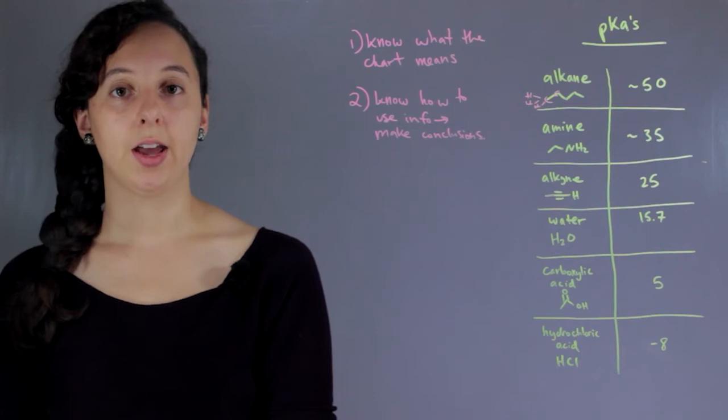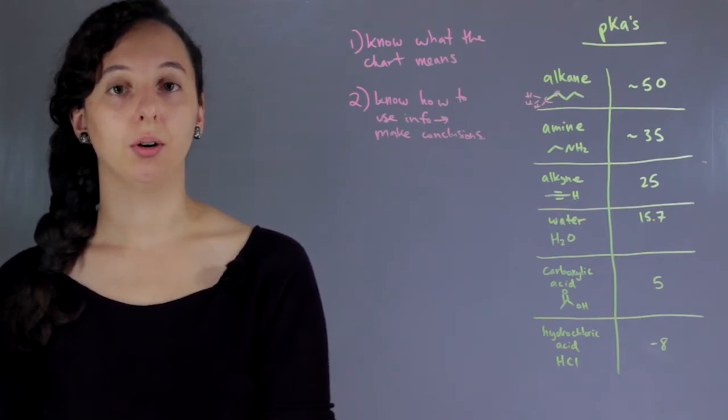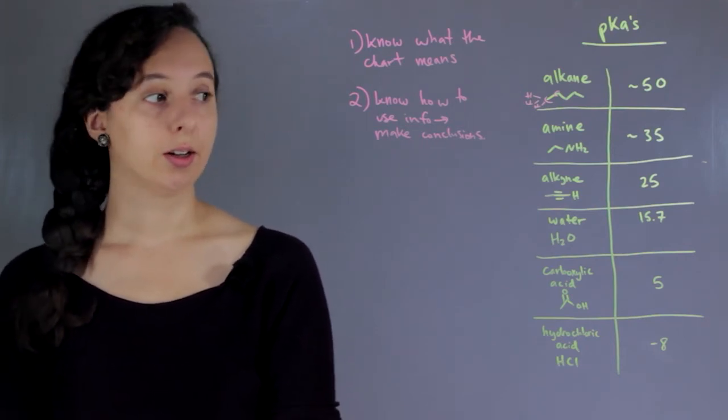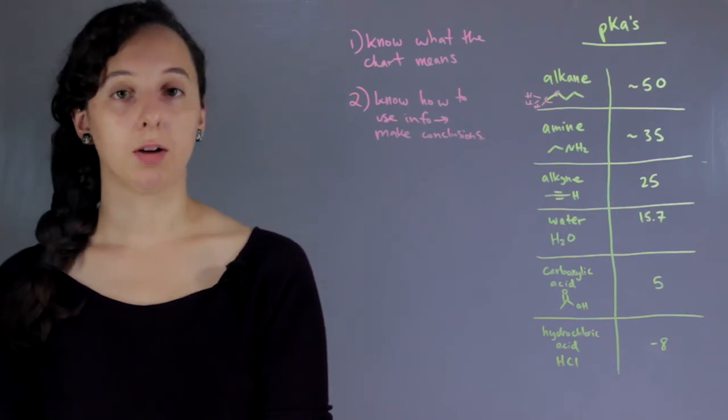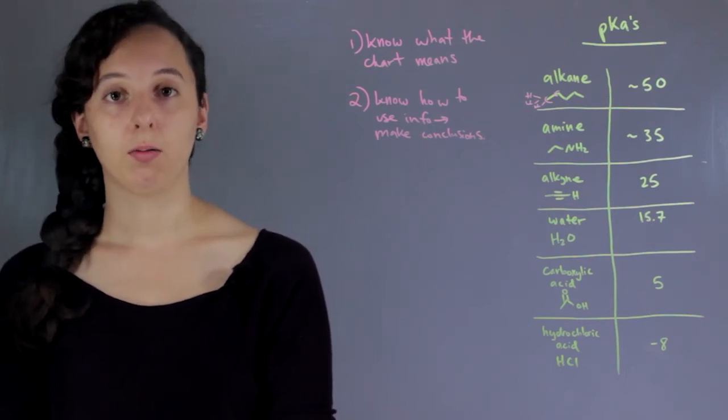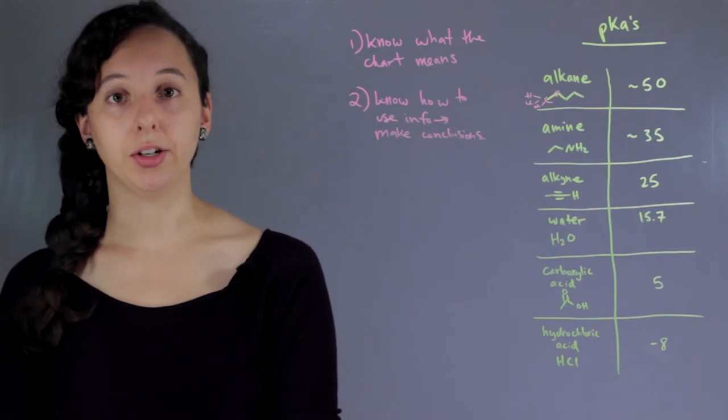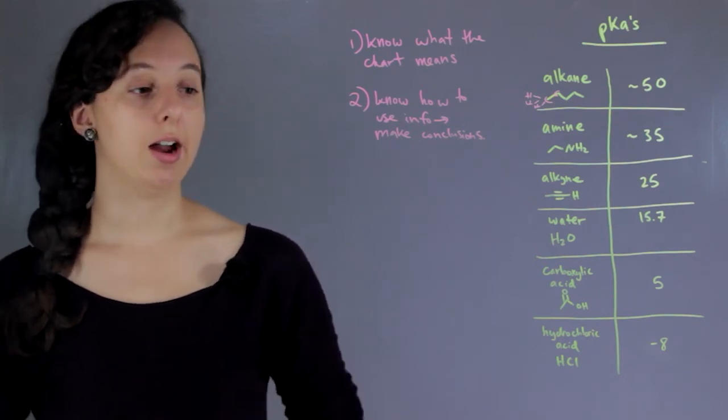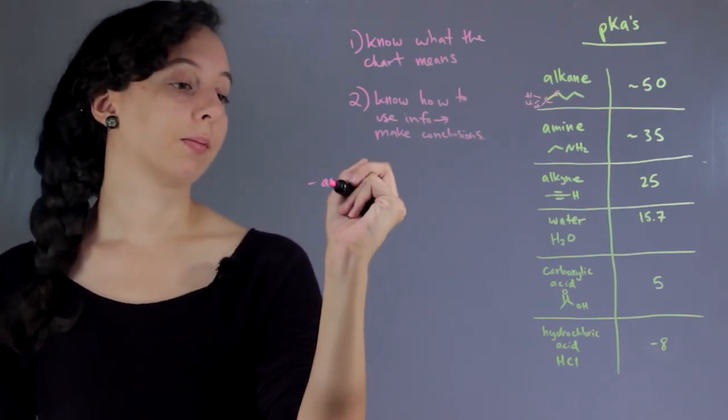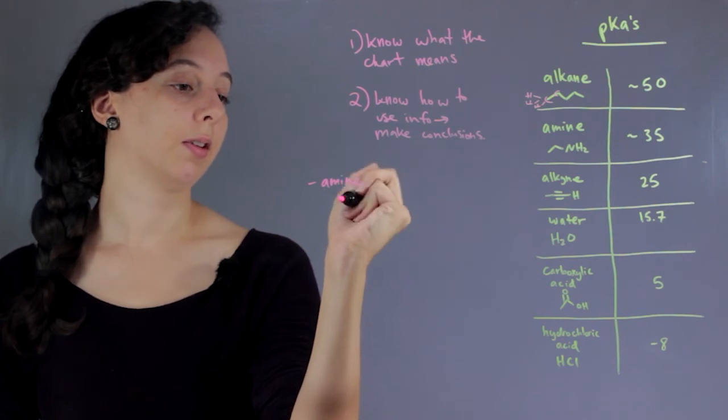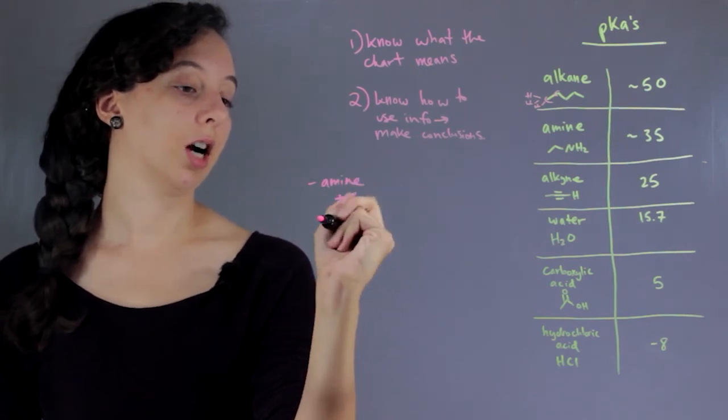Let's say that someone asked you, what's more acidic, an amine or a carboxylic acid? Well, we'd be able to use our pKa chart to answer this question. To do that, remember we want to look at amine versus carboxylic acid.